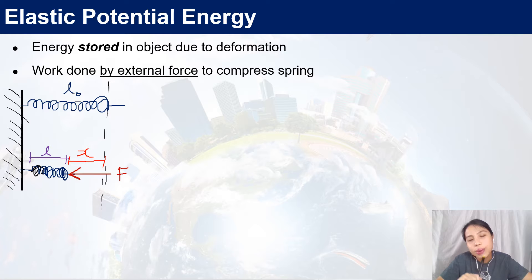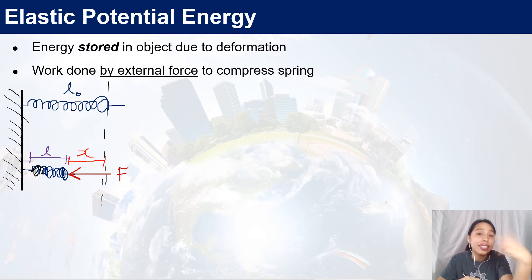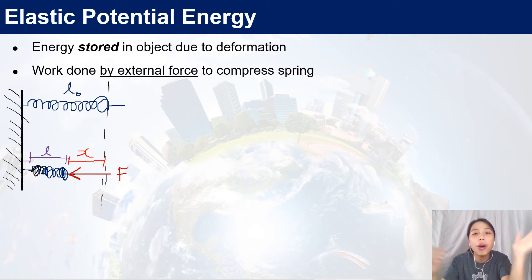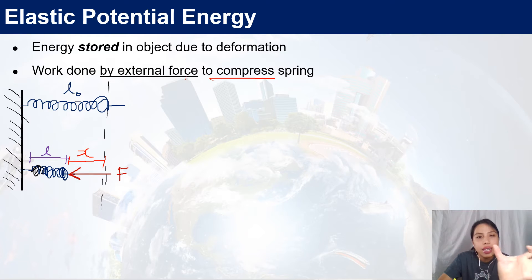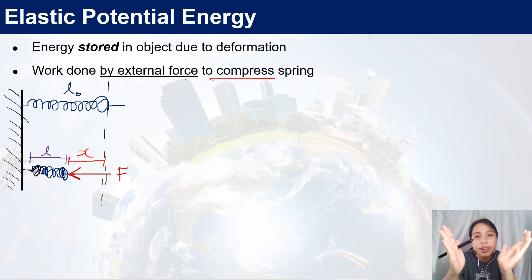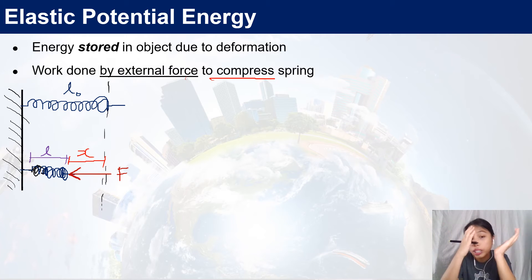Why X? Some may think of it as extension of a spring, but here we're compressing. So X is that distance which has changed. The spring was originally L0, now it's squashed. To get the X length, all you need to do is take the original length minus the length now — that gives you the extension shown in red.